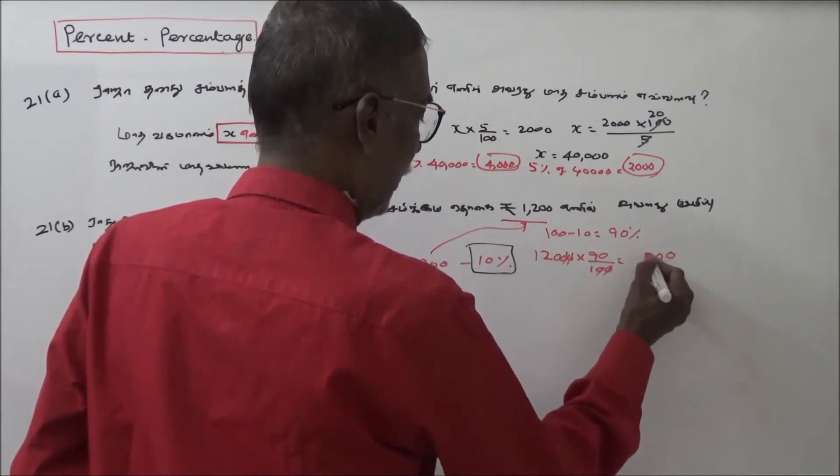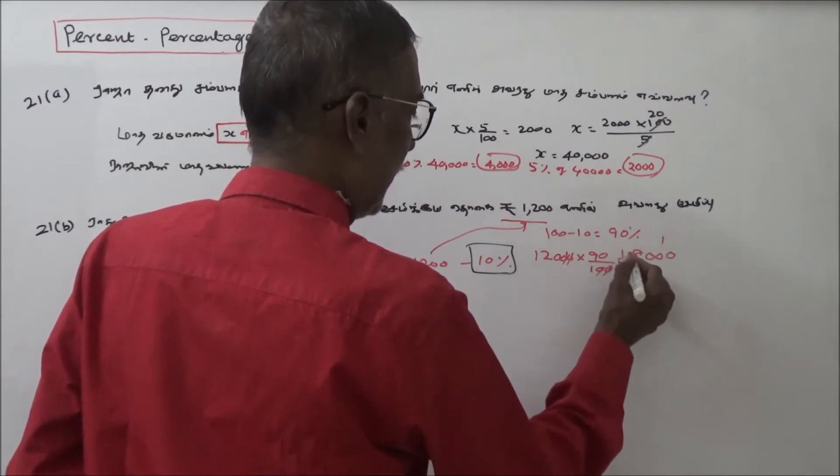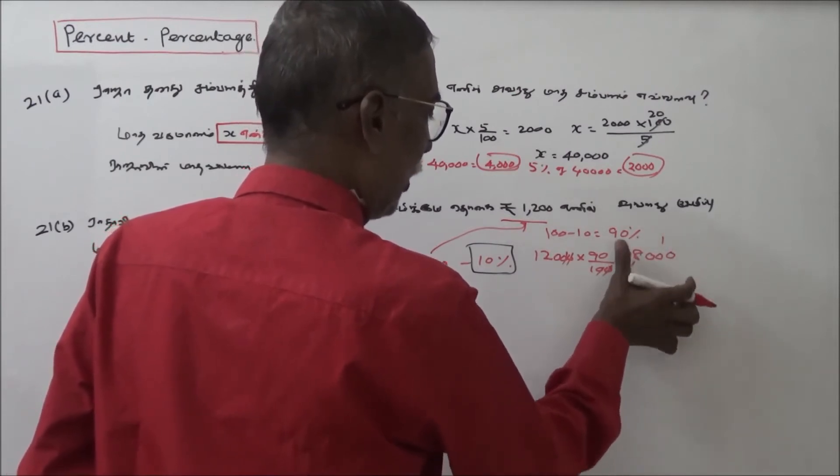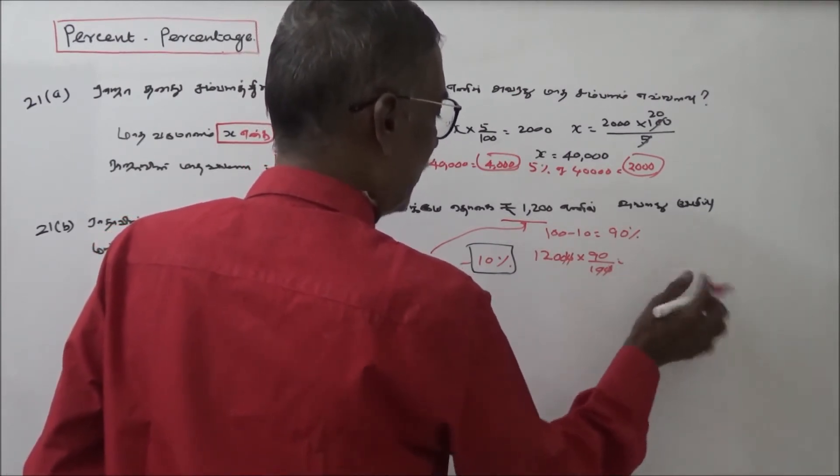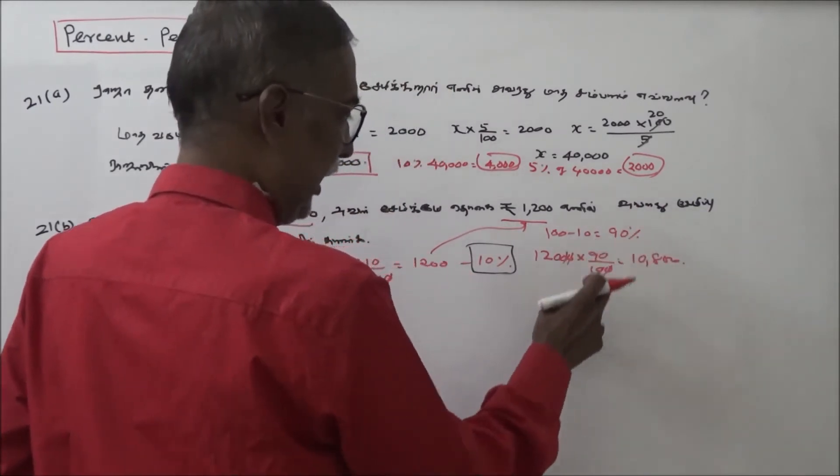Working through the calculation: 0, 0, 8, 1, 2. The expenditure amount is 10,800 rupees.